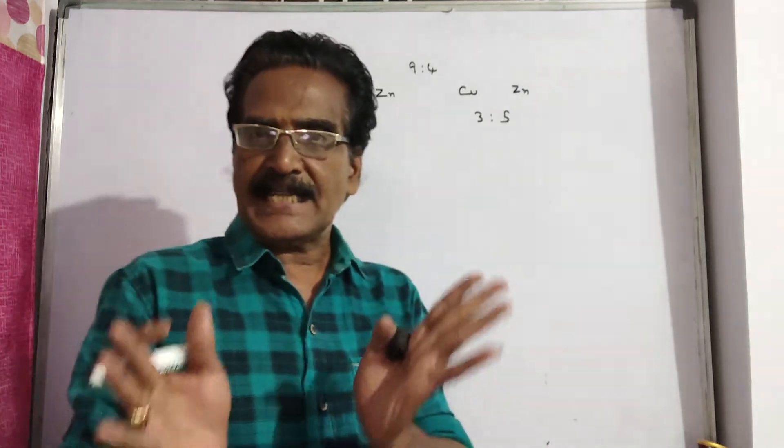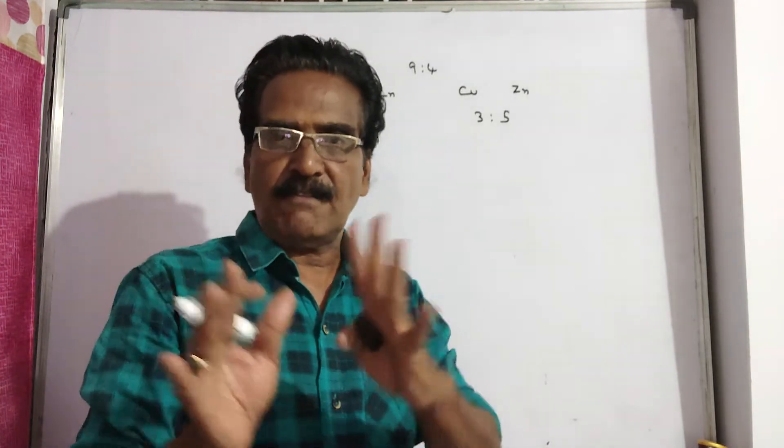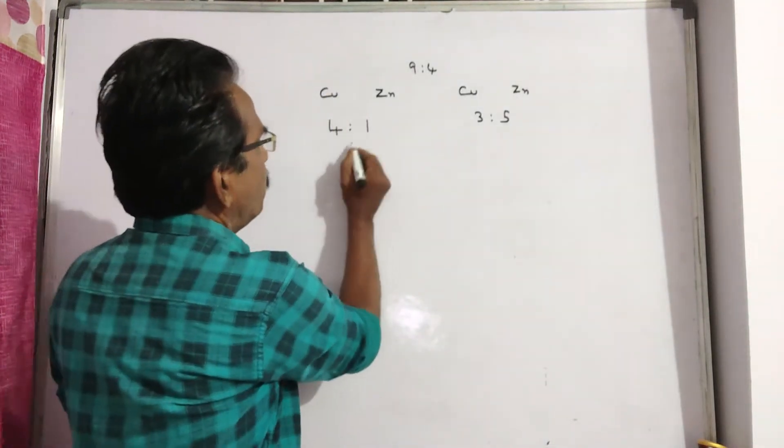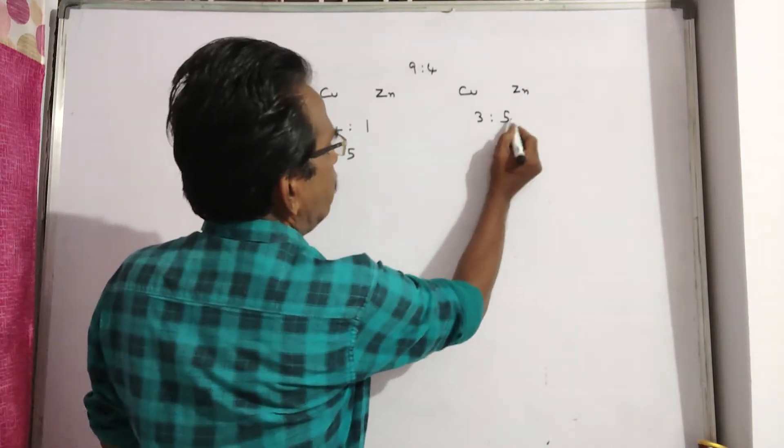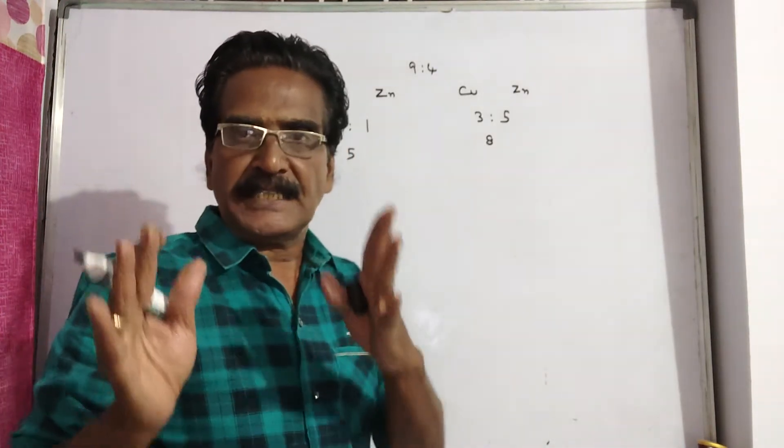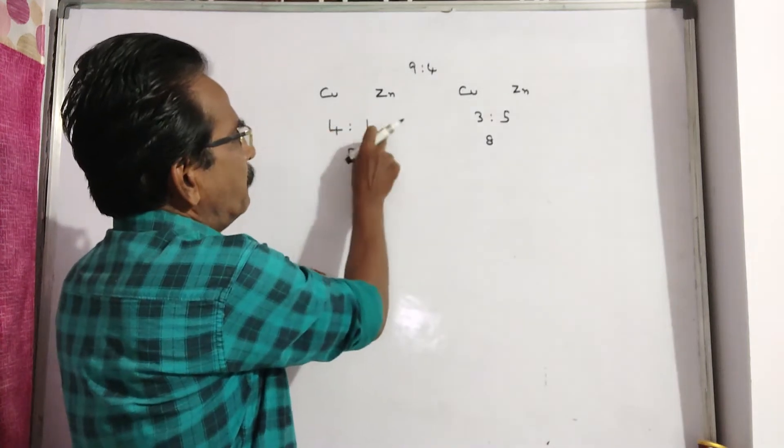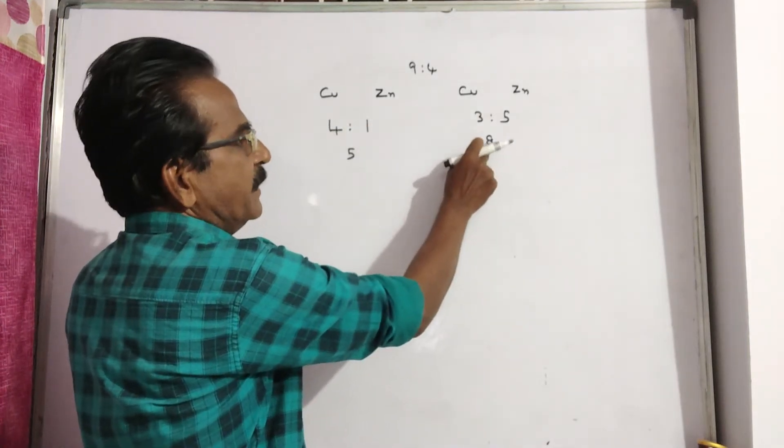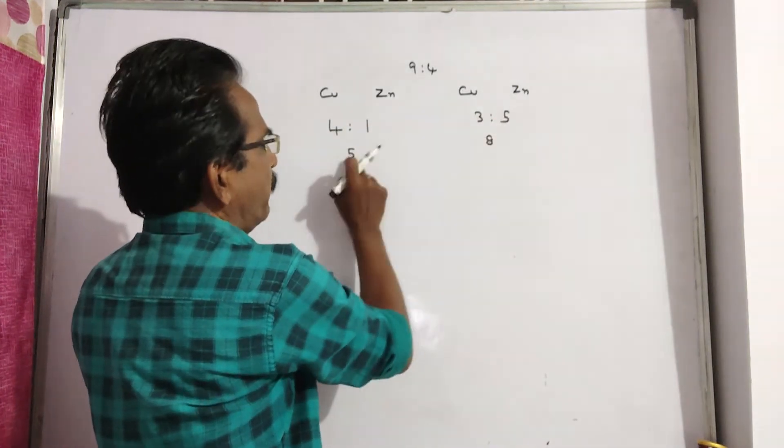Friends, first let us make the quantities equal. See, this is 4 plus 1, 5 parts. This is 3 plus 5, 8 parts. Now, we have to make the quantities equal. Let us multiply this ratio by 8. Let us multiply this ratio by 5.